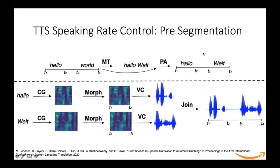Each phrase of the translated target sentence is passed through the context generation module, which generates the spectrogram as shown here. These spectrograms are then morphed to the target duration as identified by the prosodic alignment module, passed through the vocoder module to generate the speech waveform, and finally all speech waveforms are concatenated with the corresponding pause duration (t2 to t3) to generate the final waveform.